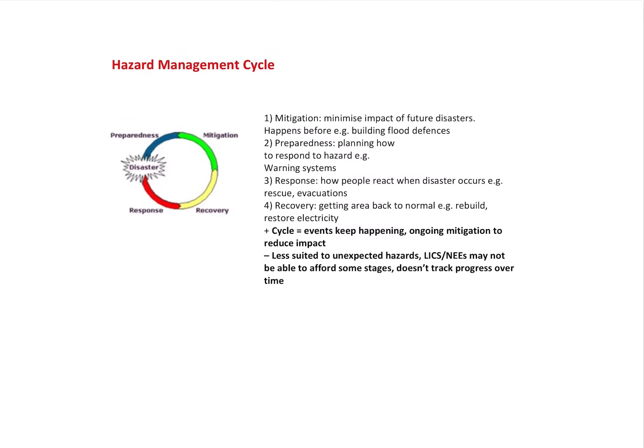To go alongside that, you've obviously got your hazard management cycle. Hazard management forms four parts. If I want to evaluate this and say events keep happening, it's ongoing mitigation to reduce impact. So perhaps seeing these hazards as more of a cycle is beneficial. However, this cycle is less suited to unexpected hazards. Perhaps we can't afford some stages, and we can't see progress over time here like perhaps we could with the park model.